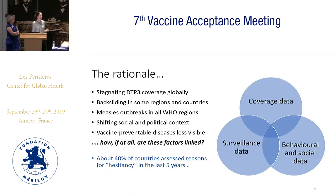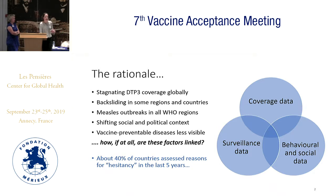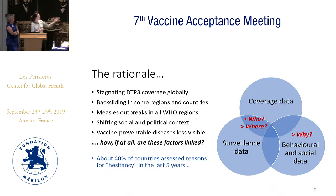With WHO and partners, based on a long series of conversations, we had a vision for not only thinking about the ways in which countries gather coverage data on an ongoing basis for different vaccines and surveillance data on outbreaks and vaccine-preventable diseases, but also a vision for countries being able to systematically gather behavioral and social data that will ultimately answer questions of not only identifying who and where the under-vaccinated are, but also why.